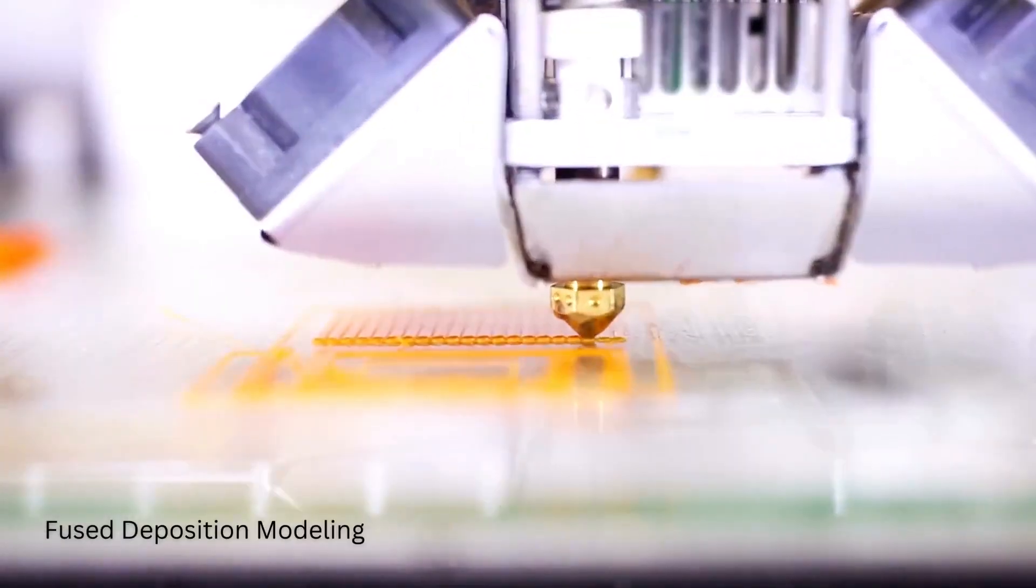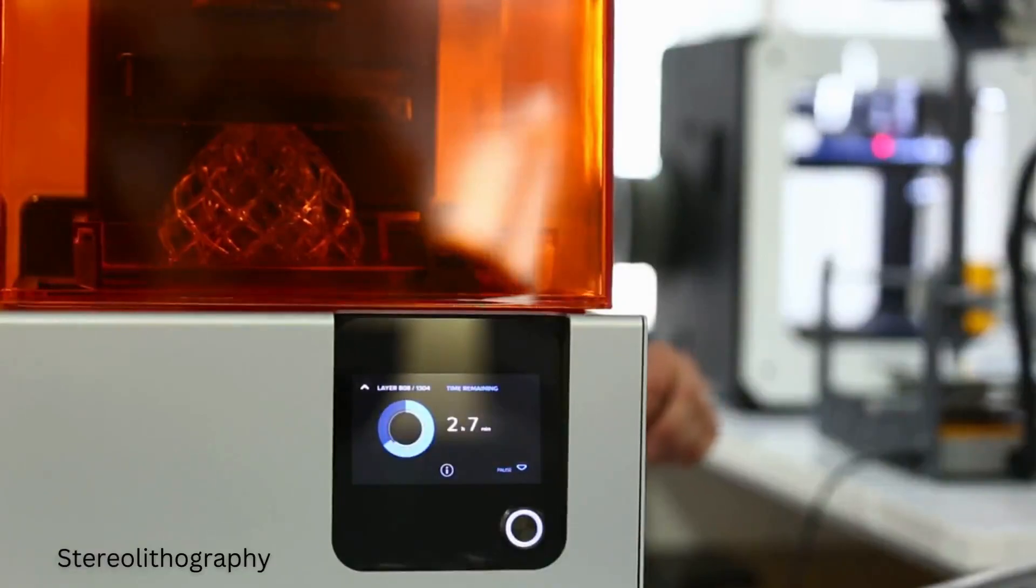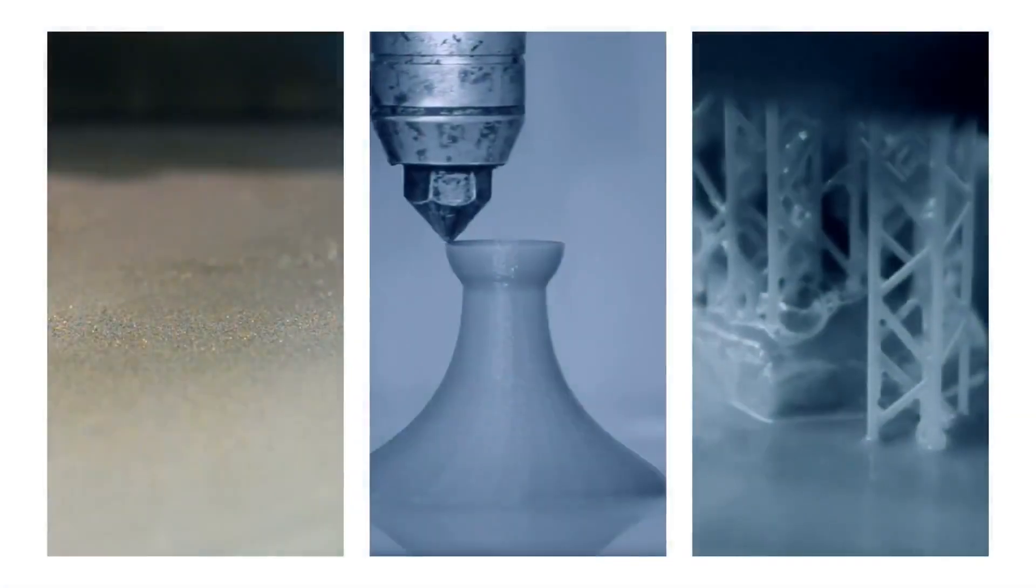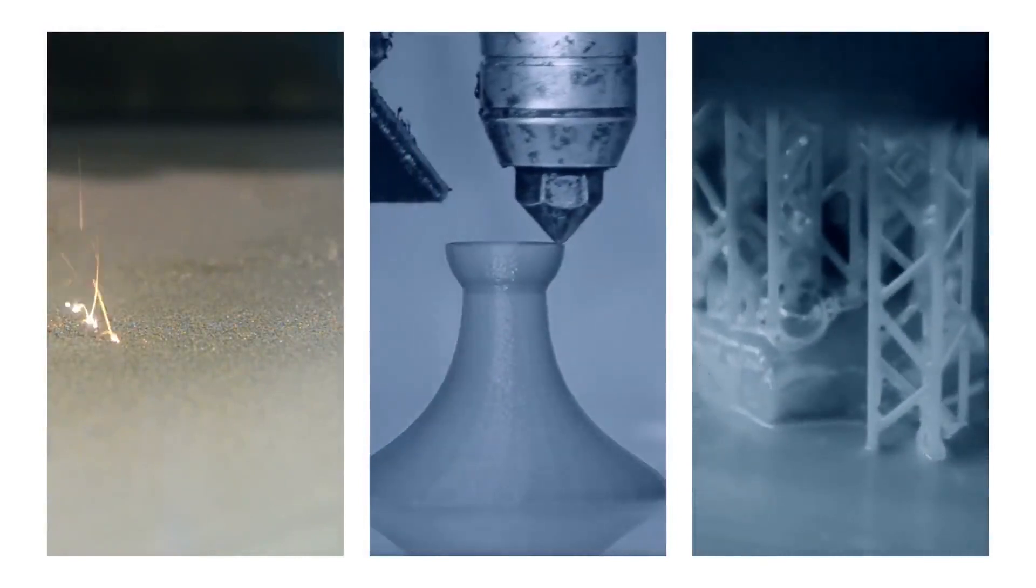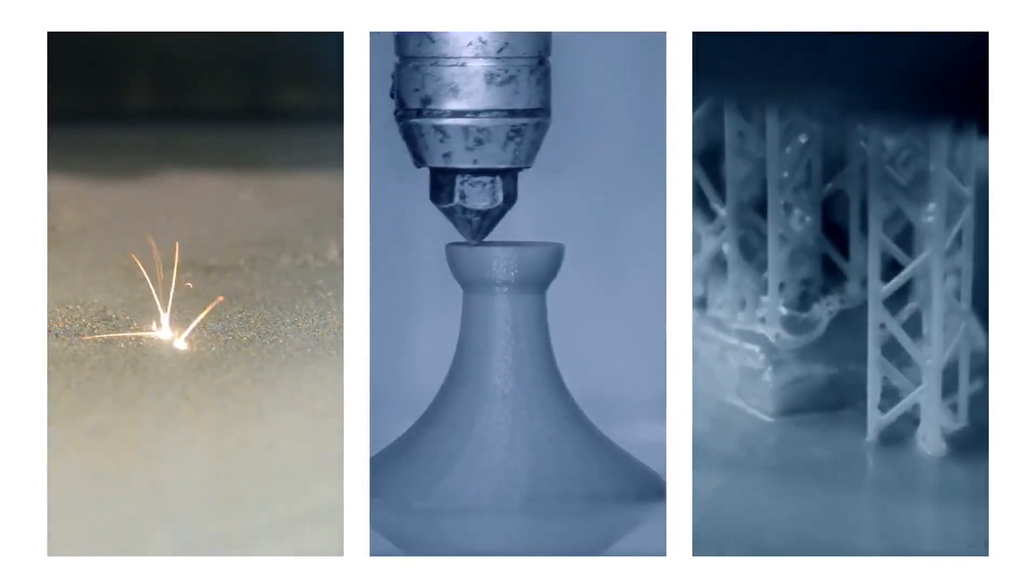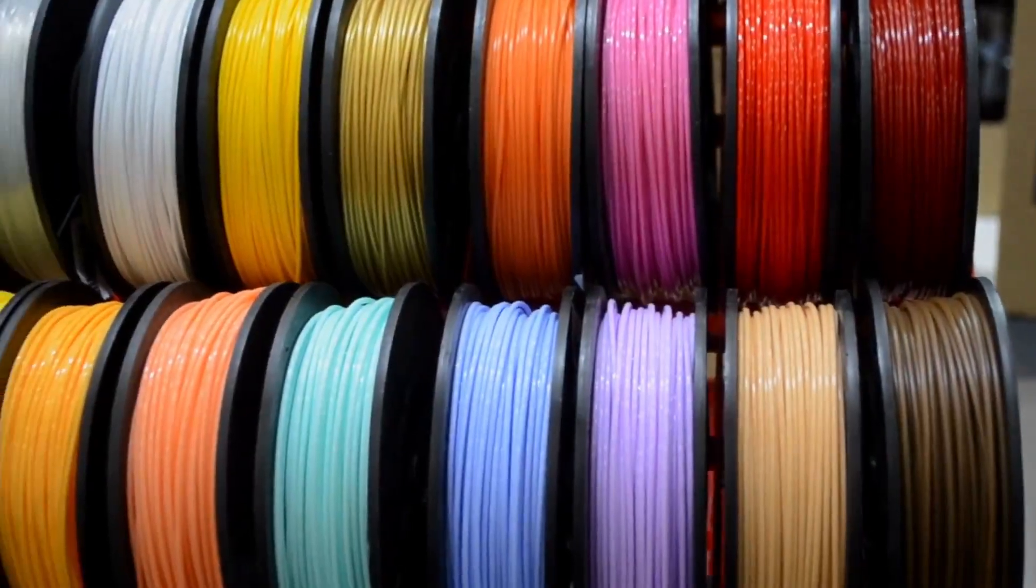Techniques like fused deposition modeling, stereolithography, and selective laser sintering offer different advantages for different applications and utilize diverse raw materials known as feedstock which come in various forms including filaments, wires, pellets, liquids, slurries, pastes, gels, and powders.